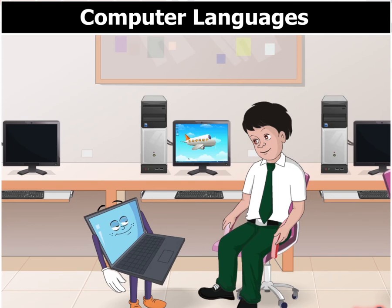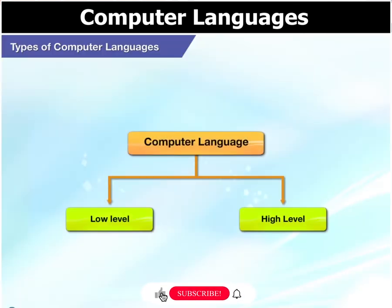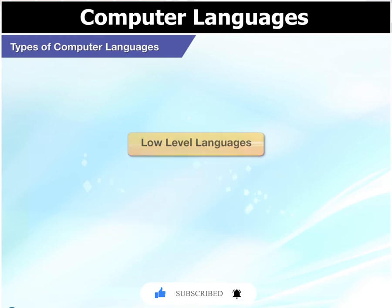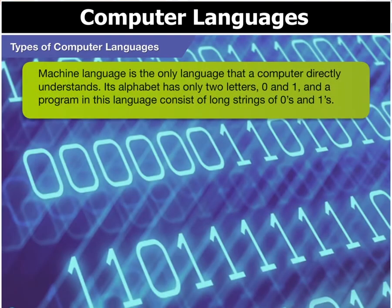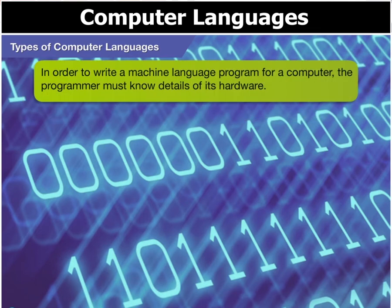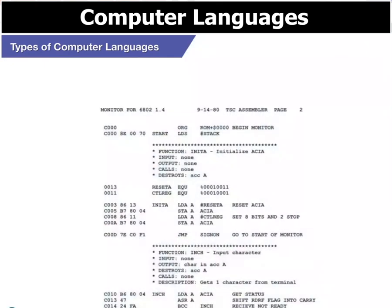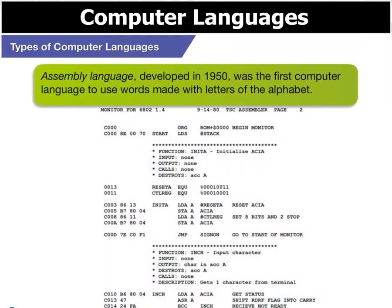Computer languages can be divided into low and high-level languages. Low-level languages are of two types: machine and assembly languages. Machine language is the only language that a computer directly understands. In order to write a machine language program for a computer, the programmer must know details of its hardware.